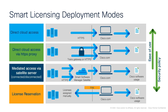Here we have a summarized view of the options: starting with the simplest, direct cloud access, right the way down to the more strict security policy controls with license reservation. In between we have direct cloud access using a proxy service or transport gateway, and then the option to use the satellite server — an on-premise device where your devices communicate with the satellite server, which then communicates directly with the Cisco Smart Software Manager.